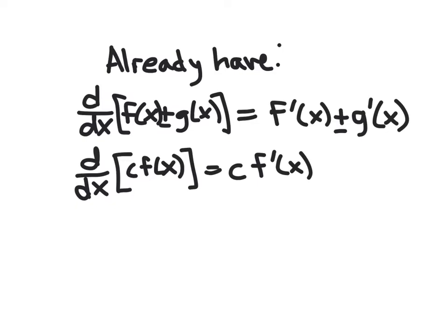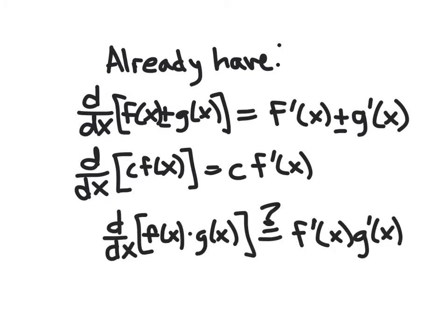So maybe we would hope that for products it would be very easy — maybe it's just the product of the derivatives — but this is not the case. The derivative of x² is 2x, and if you view x² as x times x, that's not going to be the derivative times the derivative, which would just be 1 times 1. So it's not that easy.